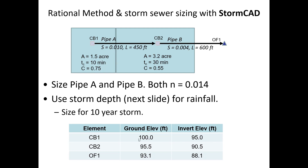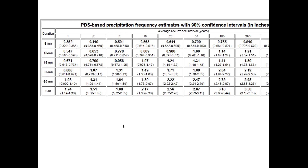For the 10-year storm, here is a precipitation depth table — note these are depths, not intensities. There are a couple of different ways to specify storm data in StormCAD, and we'll look at two methods today. The method we'll ultimately use for our problem will rely on these depths.